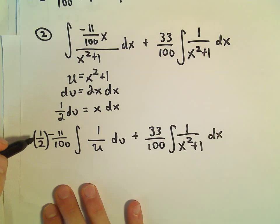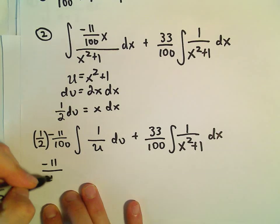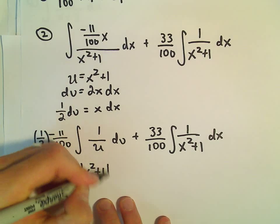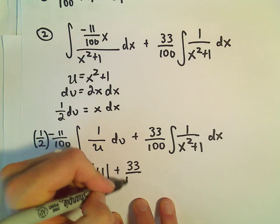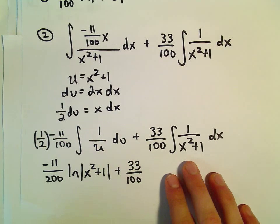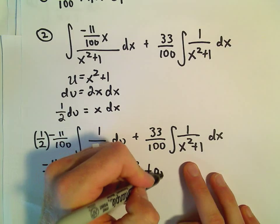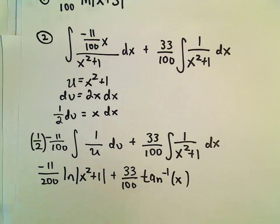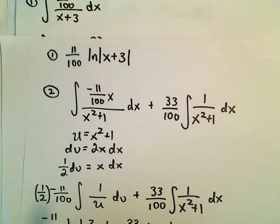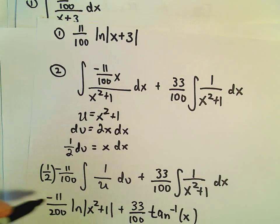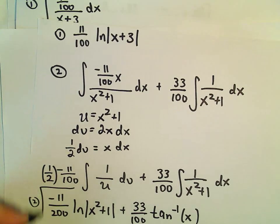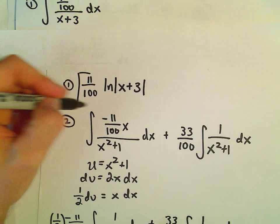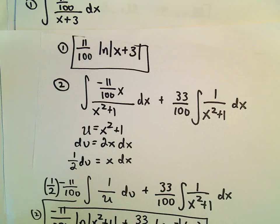When we integrate, we get negative 11 over 200 times the natural logarithm of x squared plus 1, plus 33 over 100. Using our arctangent formula, the antiderivative of 1 over x squared plus 1 is arctangent of x, plus c. You can just put the plus c at the end once we've integrated all the functions. That would be the antiderivative of the second integral.